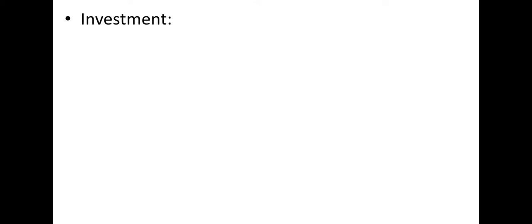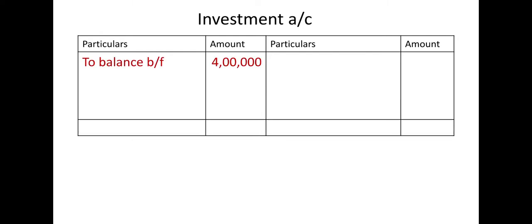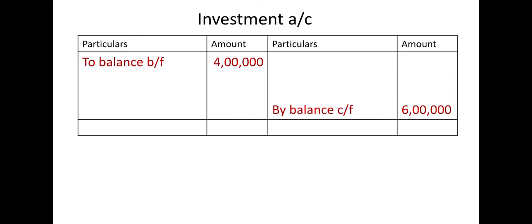First of all let's start with investment account because the main topic in this sum is investment — that is a bit difficult. Machine and furniture are comparatively easy. Investment in debentures is given — the opening balance and closing balance are given. During the year we are also selling some part of our investment and we are also receiving interest on investment. So we have to prepare a ledger account. Here it is on your screen — investment account. The opening balance of investment account is rupees 4 lakhs — in the beginning of the year our investment was rupees 4 lakhs, and at the end of the year our investment is 6 lakhs.